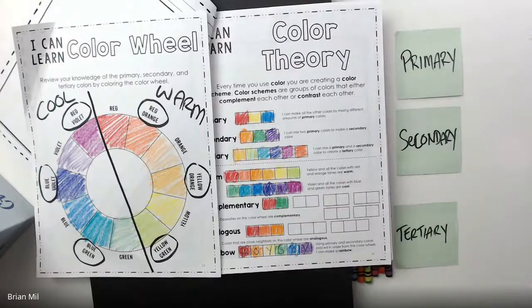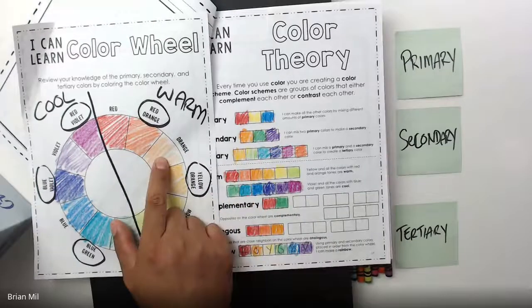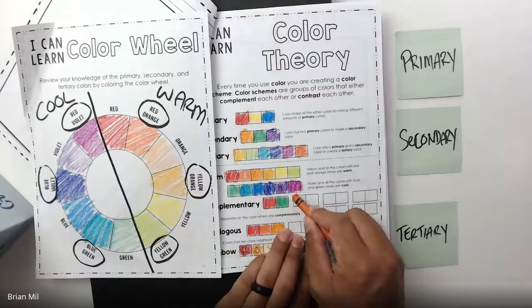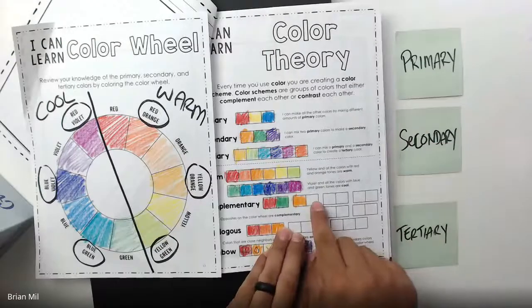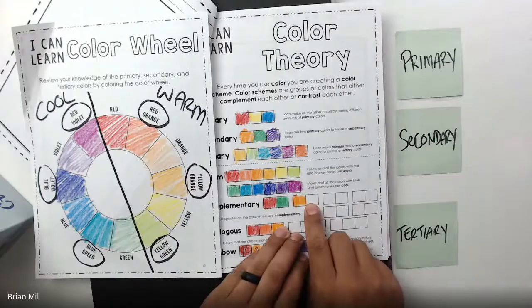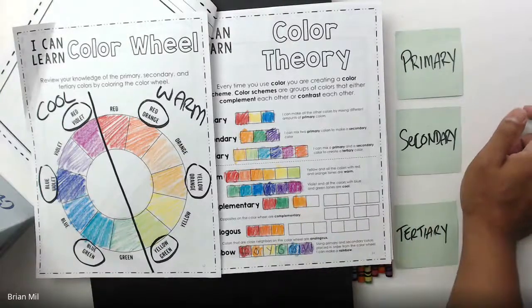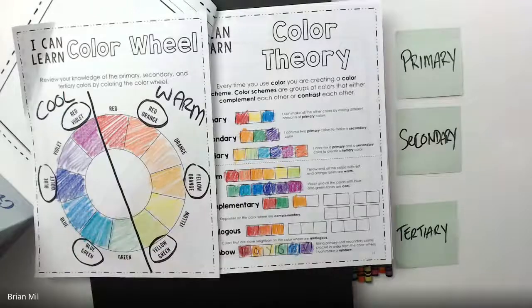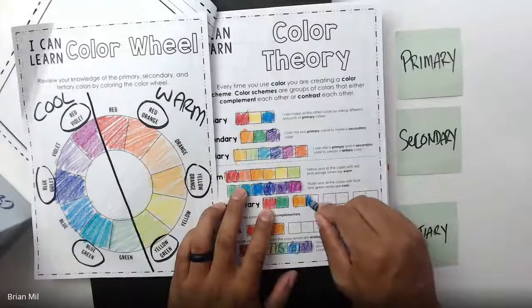Who can tell me — what is the complementary color of orange? I'm going to color this block orange, and someone can tell me what to put in the block next to it. What is the complementary color of orange? I'm going to pick Kellen. Wouldn't it be blue? Yes — it's directly across from orange on the color wheel, so I'm going to color the block next to it blue. Good job!